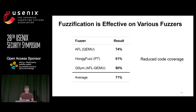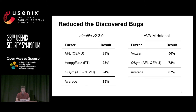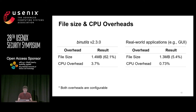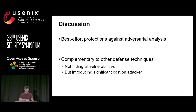When testing discovered bugs on the binutils libraries, we reduced 97% of discovered crashes and achieved 67% reduction on the LAVA dataset. For overhead, there is 62% size overhead and about 4% CPU overhead on binutils. For real applications, 5% file size overhead and less than 1% CPU overhead. Our solution is a best-effort approach against adversarial analysis, complementary to other defense techniques — we are not hiding all vulnerabilities, but introducing significant cost to adversaries.